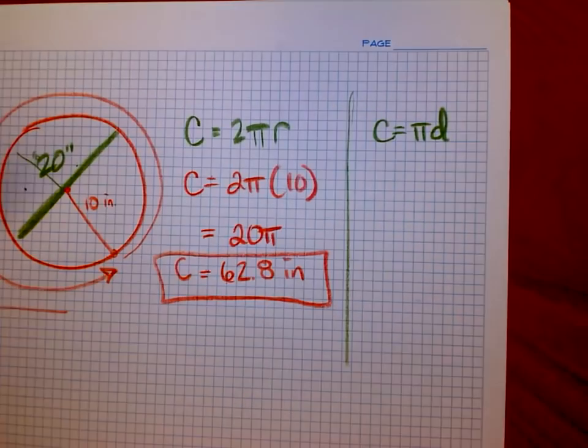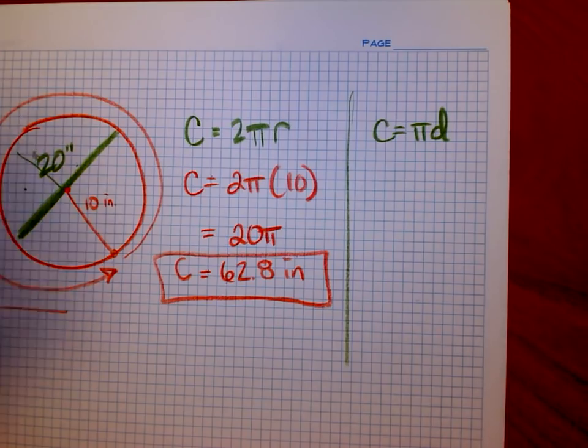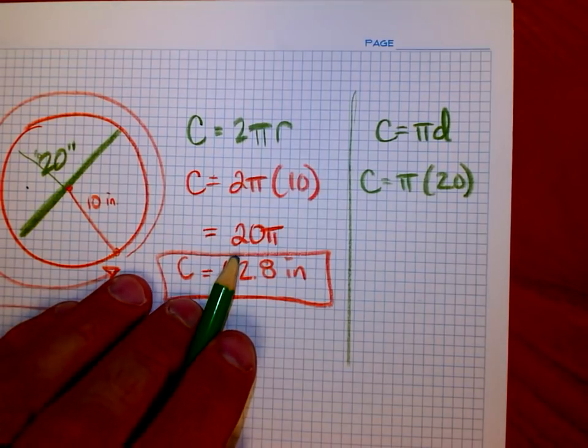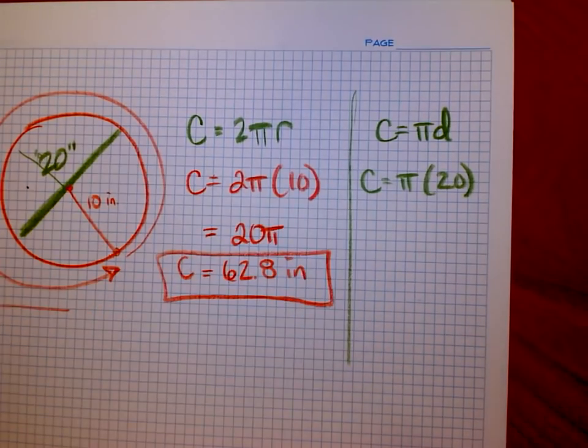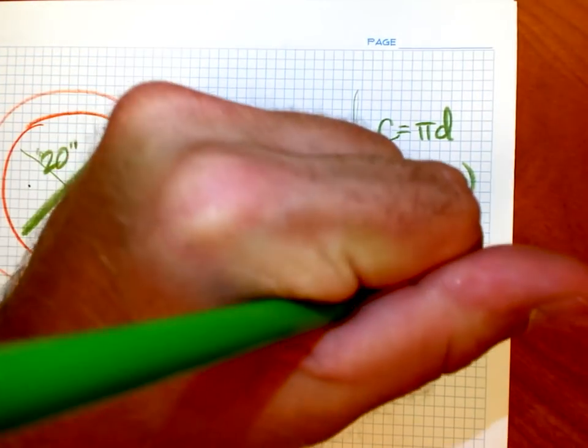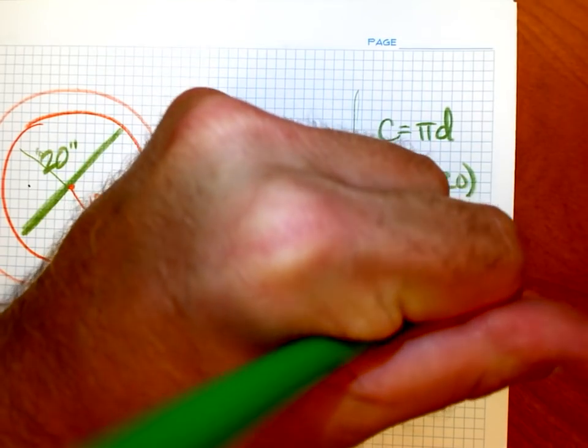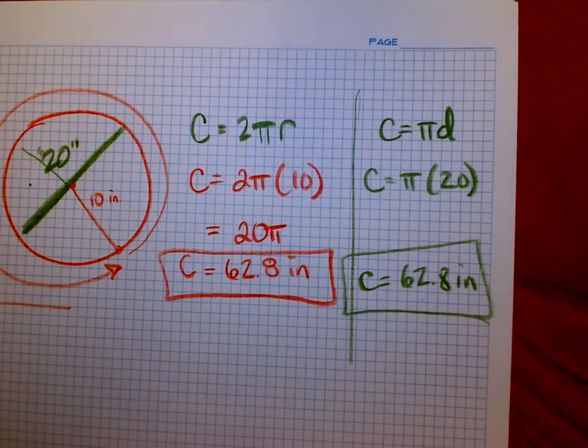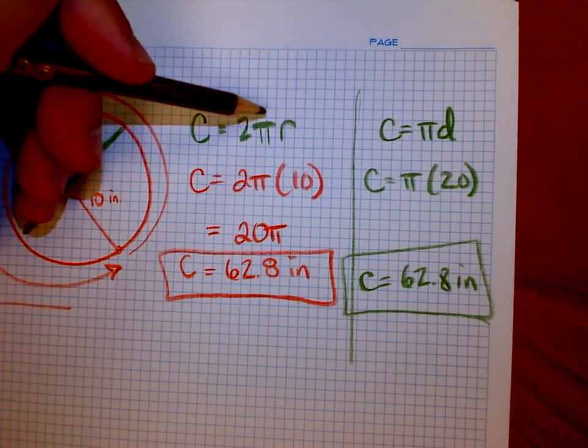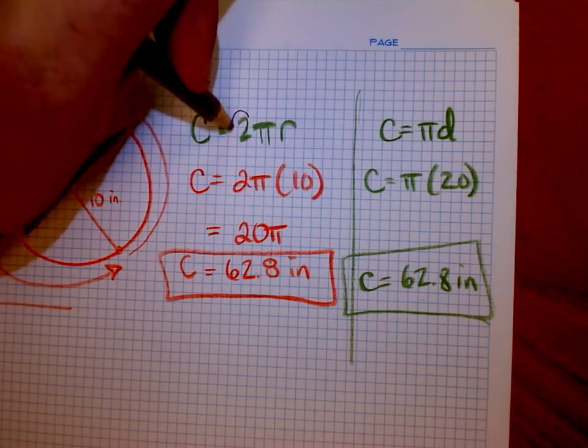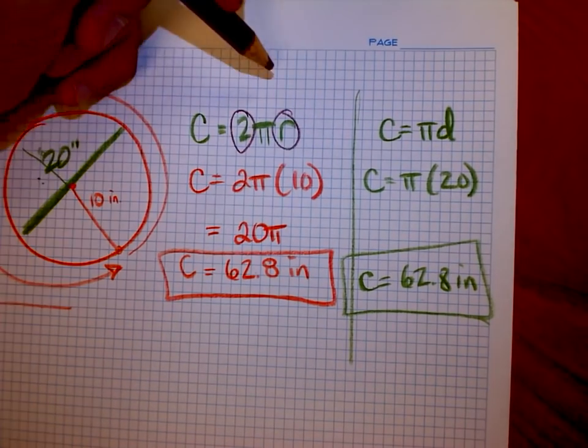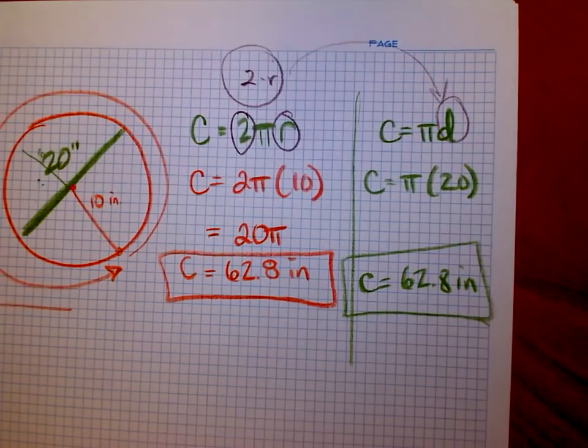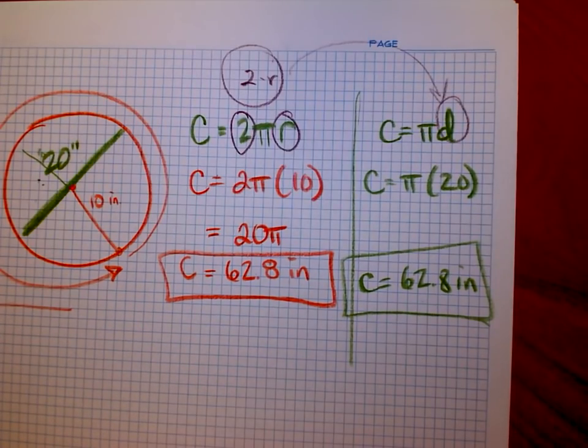Now, in that case, if I was given a diameter of 20, then notice that I would have circumference is π times 20. Oh, look at that. 20 times π, π times 20, it's the same thing, right? So the circumference in this case would have been 62.8 inches also. And the reason the formulas are the same is because if you look at this, they both have a π. This one has 2 times the radius. Well, if I doubled the radius, then that piece right there would turn into the diameter. So it's all really the same thing.